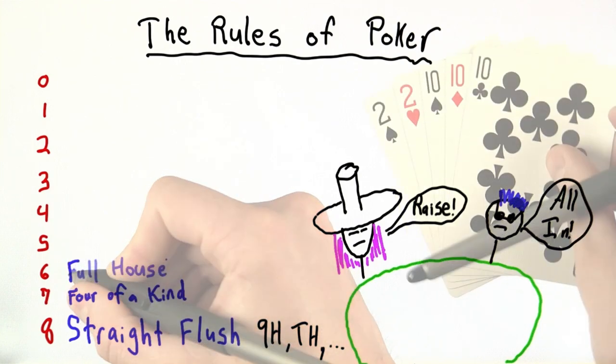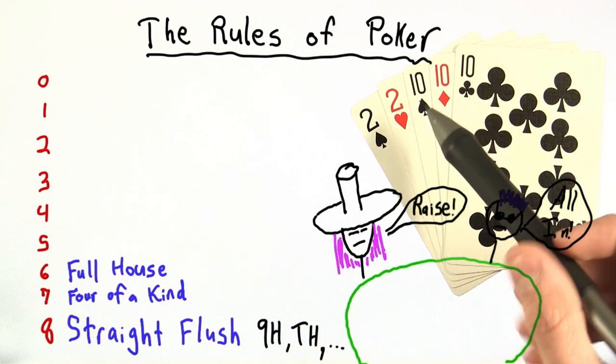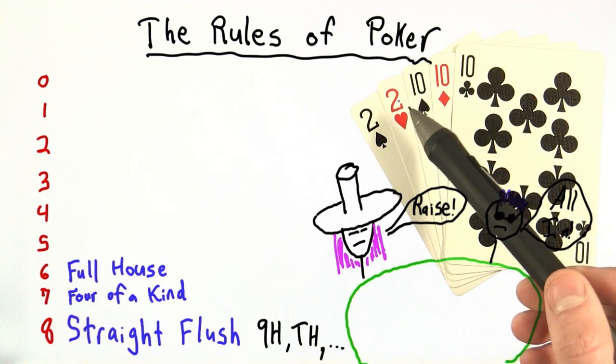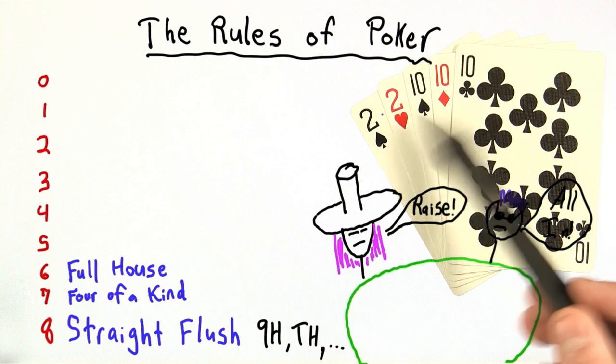Next best is the full house. And a full house is just three cards of one rank, so here we have three tens, and two of another, so two twos. This hand is a full house that we would call tens full of twos.